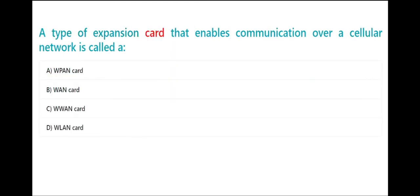A type of expansion card that enables communication over a cellular network is called a A. WPAN card B. WAN card C. WWAN card D. WLAN card. The correct answer is C. WWAN card.